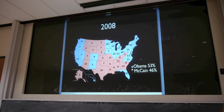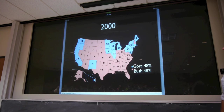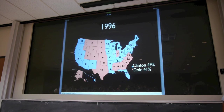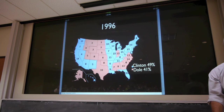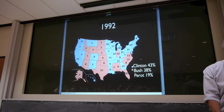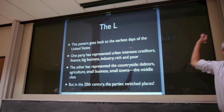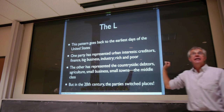Much the same was true in 2008, and in 2004, 2000, 1996. Sometimes the L is fat, sometimes it's thin — that determines who wins. But more or less, you see the same pattern in every election. That L pattern actually goes back to the very earliest days of the United States.